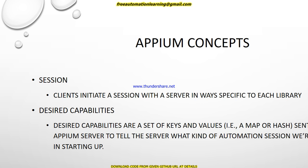The flow is: client sends a request to the server, server sends it to the mobile, mobile sends back an HTTP response to the server, and the server responds to the client. We get the result whether that step passed or failed. When we start our automation scripts, a session is created by Appium's client library — similar to how a session is created in Selenium WebDriver when we run a test script. The client initiates a session with the server, then starts execution.